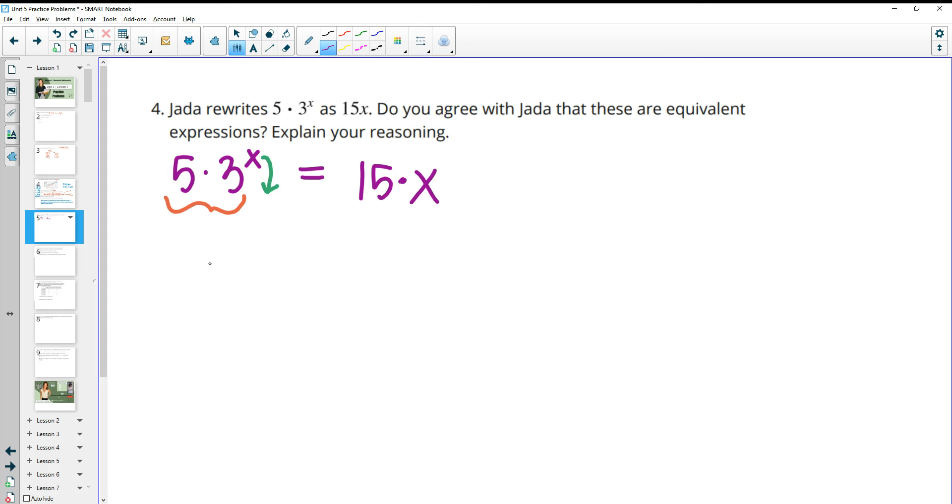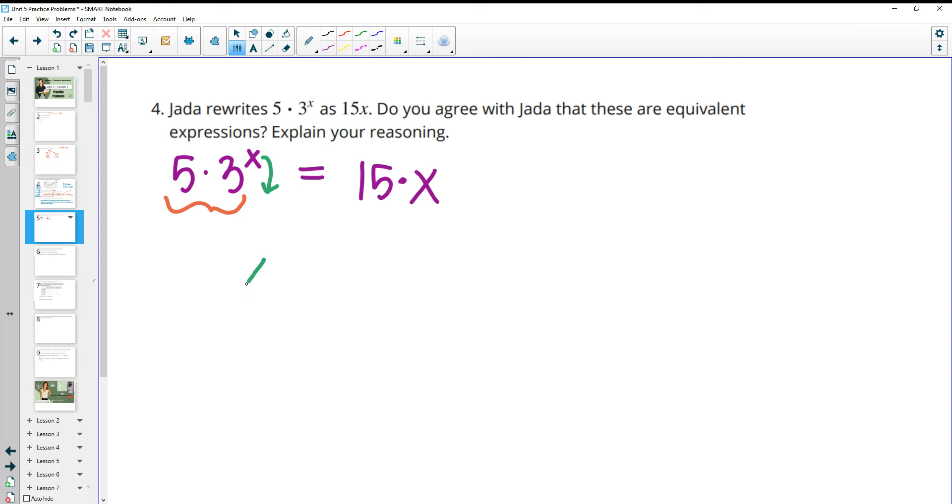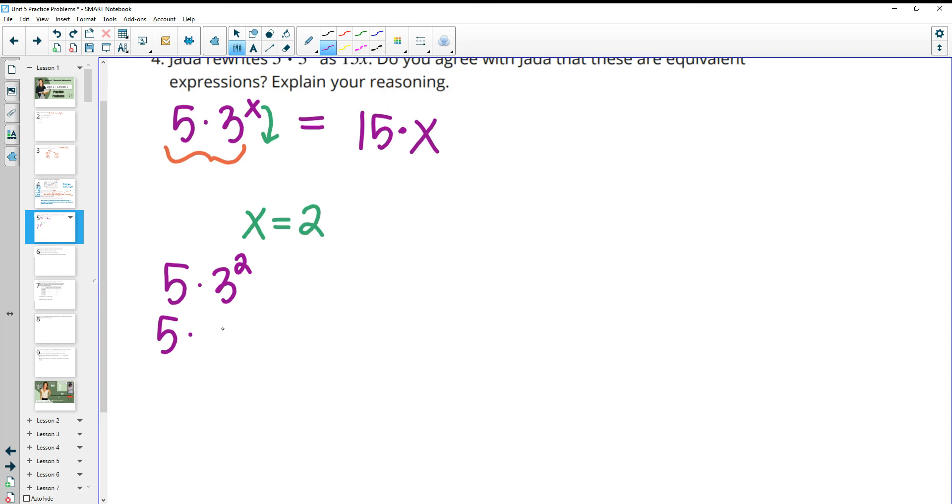Okay, so this is not going to be a true statement, and you can explain this in different ways. But if we just looked at maybe plugging in a value for x, let's just plug in, if we looked at x equals 2, if we plug this in over here, this would be 5 times 3 squared, which means that we have 5 times 3 times 3, you could write it as, or you could write it as 5 times 9, and we end up with 45. So we know that this expression is equivalent to 45 when x equals 2. Where if we do that here, we get 15 times 2. And when we do 15 times 2, that's 30. So then we can see here that those are not equivalent.